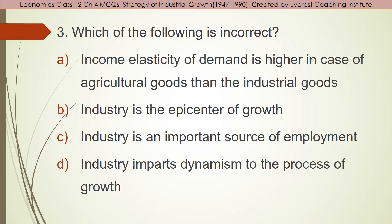Question number three asks: Which of the following is incorrect? Be careful — the question says 'incorrect,' not 'correct.' Many students make this mistake. Option A says income elasticity of demand is higher in case of agricultural goods than industrial goods. Option B: Industry is the epicenter of growth. Option C: Industry is an important source of employment. Option D: Industry imparts dynamism to the process of growth. The answer is option A, because income elasticity of demand is actually higher for industrial goods than agricultural goods.